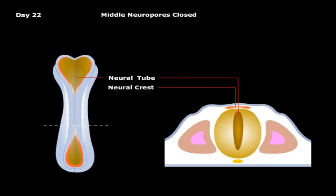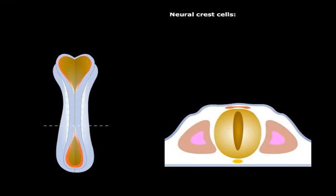Converting the neural groove into a complete, enclosed, and hollow neural tube. At the same time, as the neural folds fuse, a population of cells separates from the tips of the neural folds to become a mass of mesenchymal cells called the neural crest.